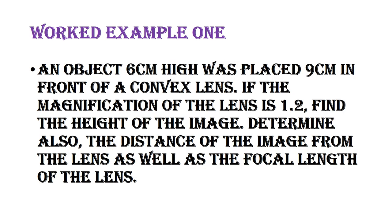Let's solve worked example one. An object 6 cm high is placed 9 cm in front of a convex lens. So object height OH = 6 cm, object distance U = 9 cm. The magnification of the lens is 1.2. Find the image height, the image distance V, and the focal length F.